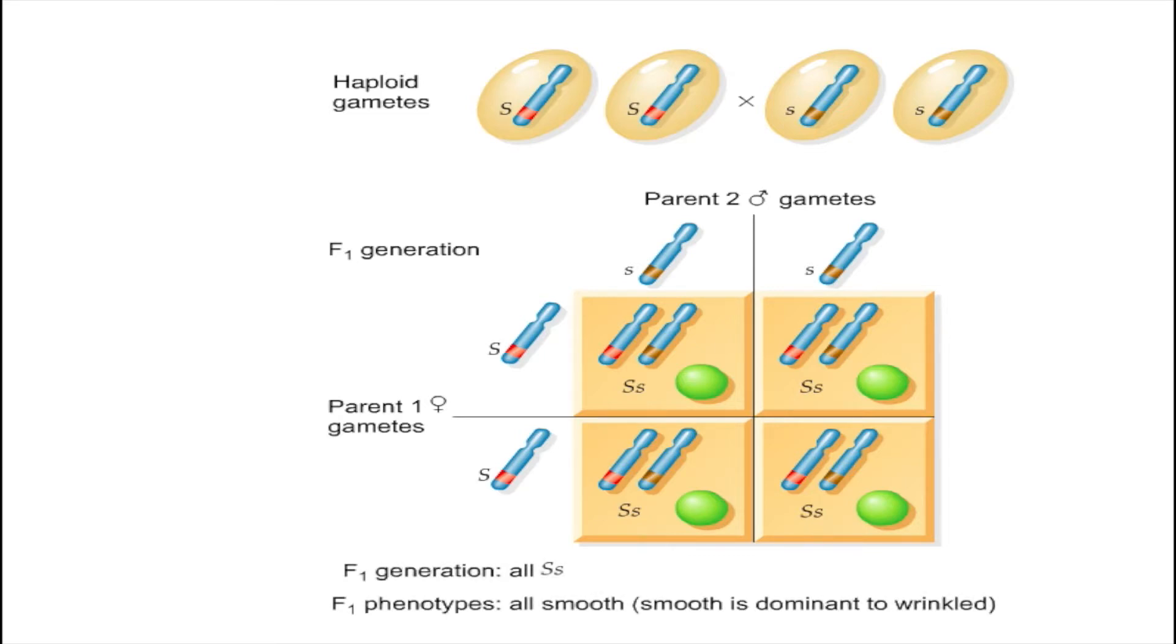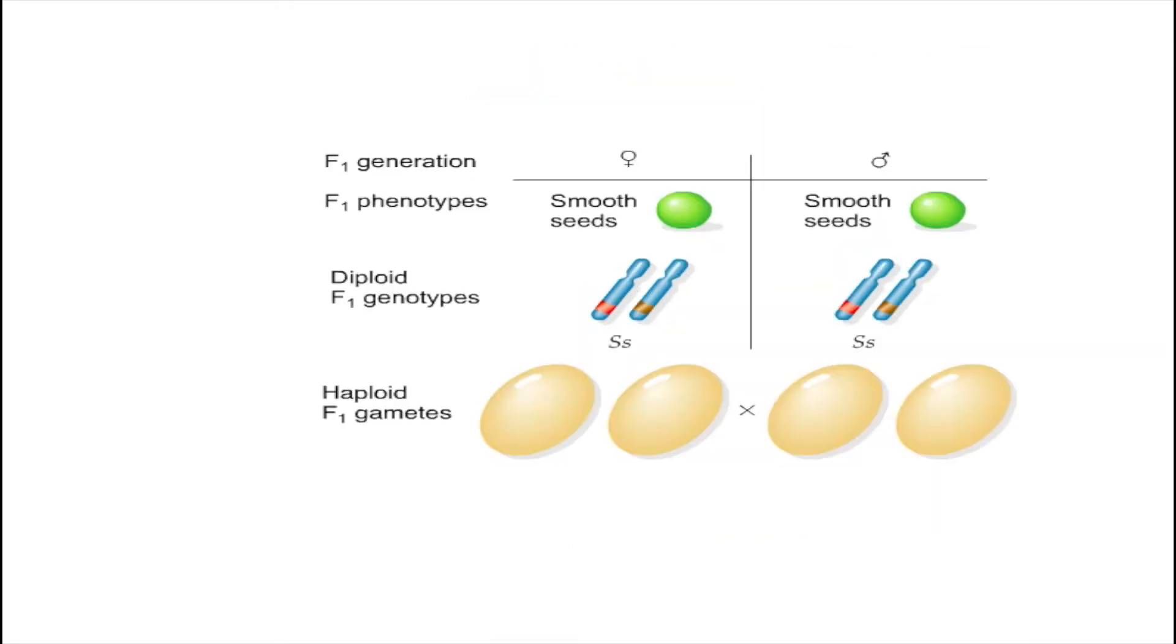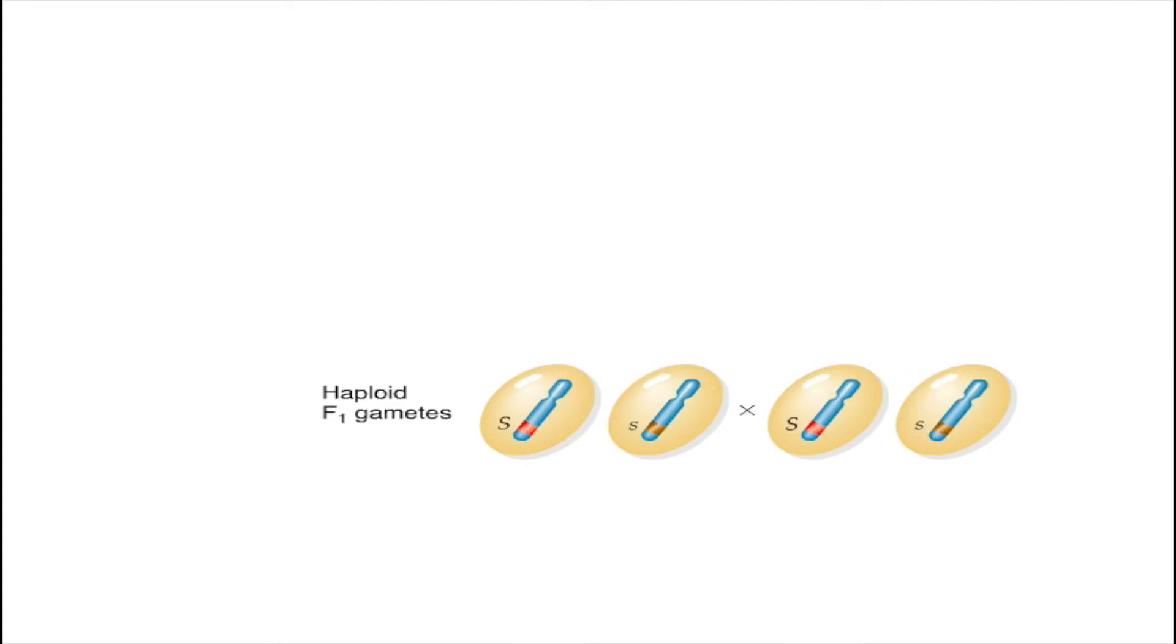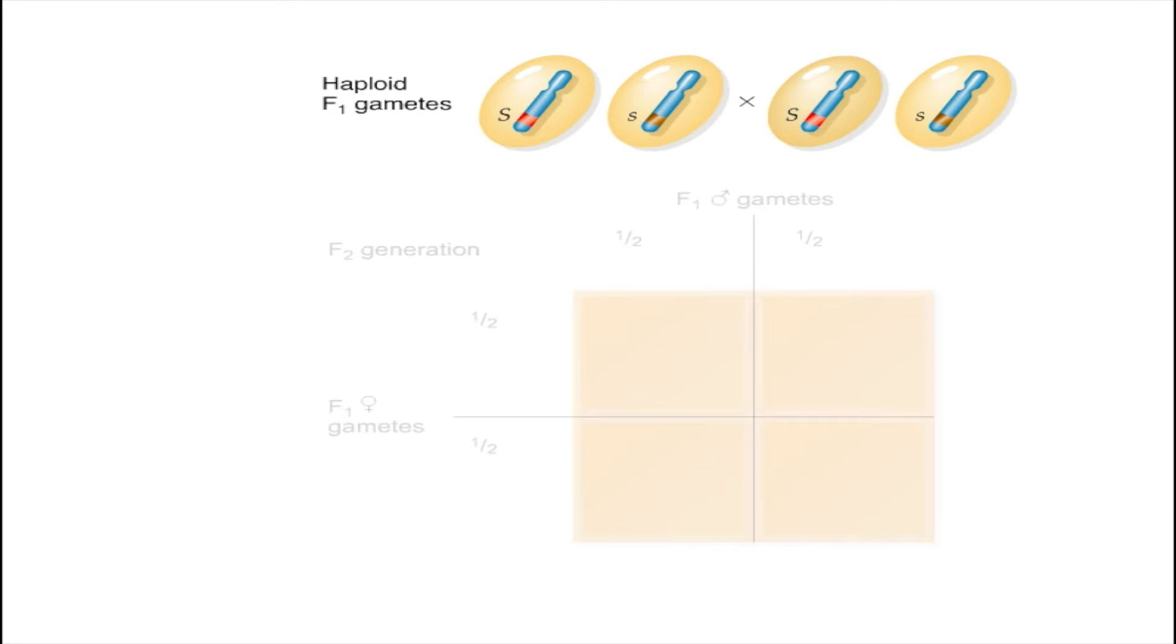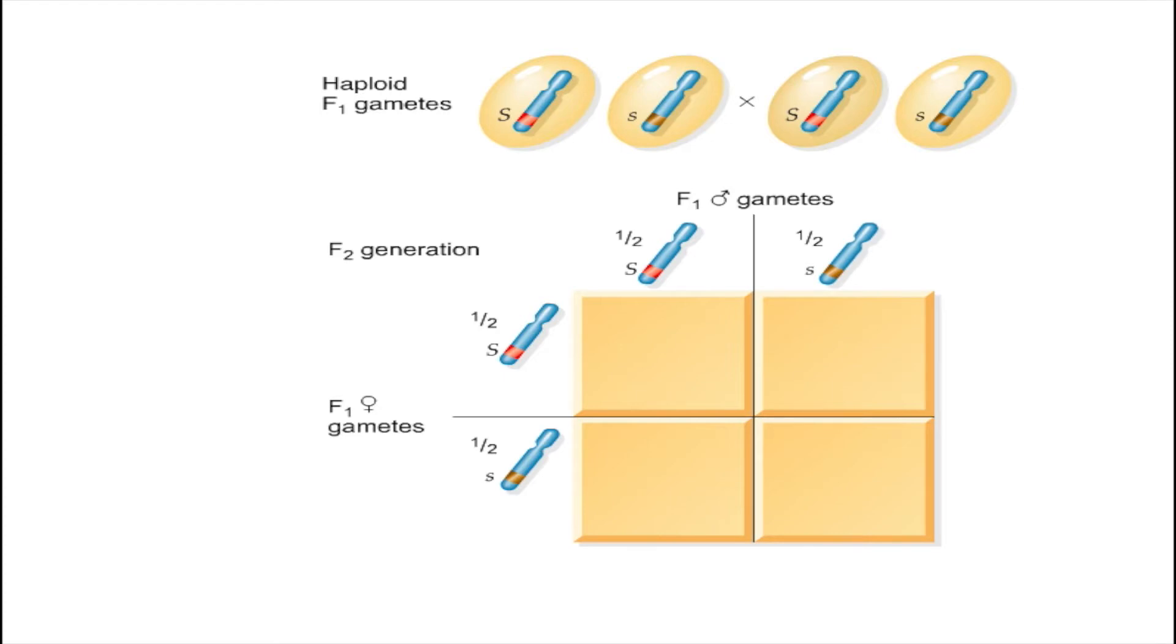The F1 parents produce either big S or little s gametes. We can depict this with a Punnett square that shows the gametes and the possible unions between these gametes. When the F1 gametes join, three possibilities can result in the F2 generation.